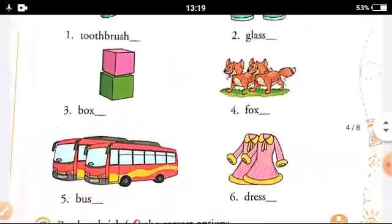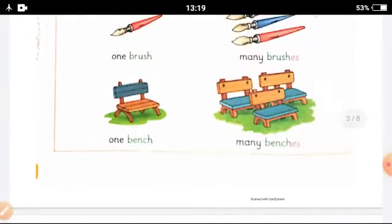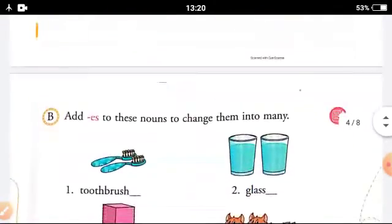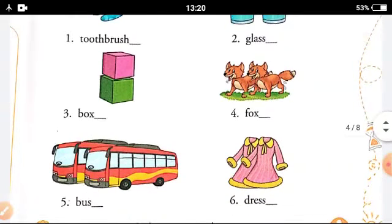Now in this, add 'es' to these nouns to change them into many. Toothbrush - there are two toothbrushes. So you add 'es' after 'h': T-O-O-T-H-B-R-U-S-H-E-S. Then glass becomes glasses. You will be adding 'es' in each of these: box becomes boxes, fox becomes foxes, bus becomes buses, and dress will be dresses.